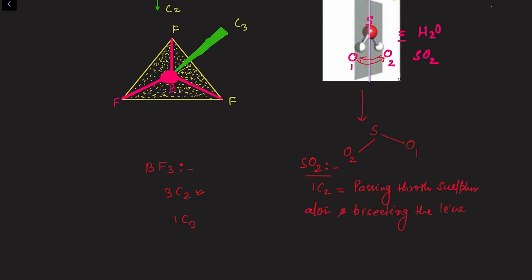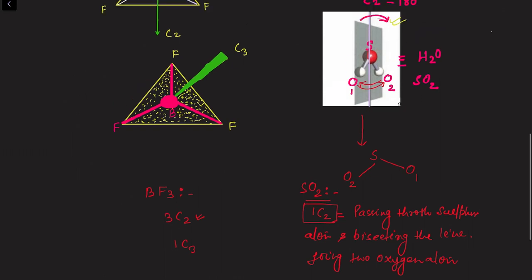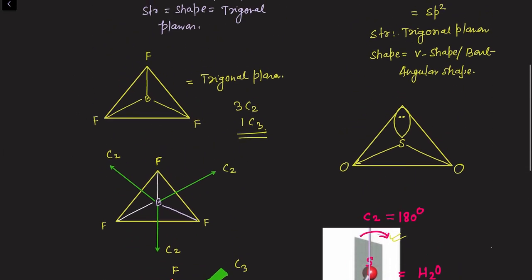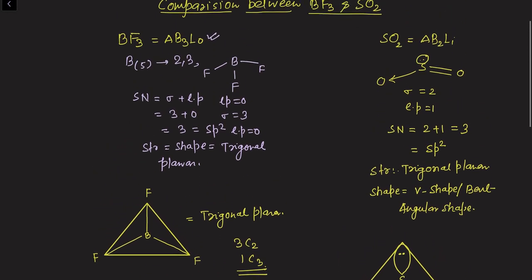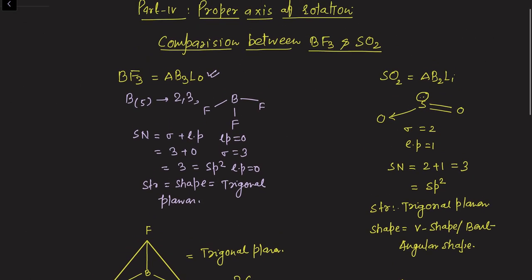This is the effect of the presence of a lone pair of electrons. Even if the structure looks similar, it doesn't mean all molecules will have the same symmetry elements or proper axes of rotation. The conclusion is: first check the hybridization, then check the structure, then check the shape, and always perform symmetry operations on the actual shape of the molecule — not the structure.